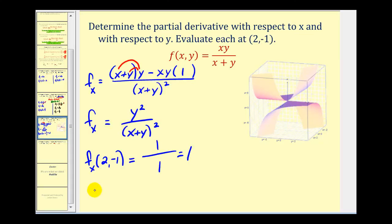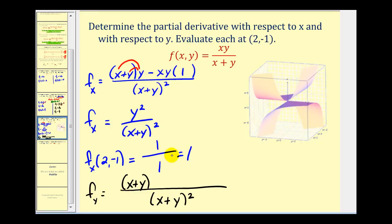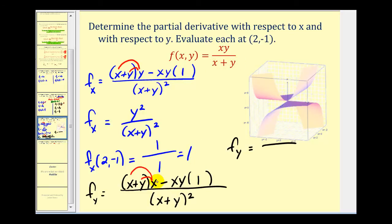The partial derivative with respect to y — we differentiate treating x as a constant. Applying the quotient rule with denominator (x + y) squared: the numerator is (x + y) times x (derivative of xy with respect to y, treating x as constant) minus xy times the derivative of the denominator. When we distribute, we get x squared + xy minus xy, so those terms cancel, leaving x squared over (x + y) squared.